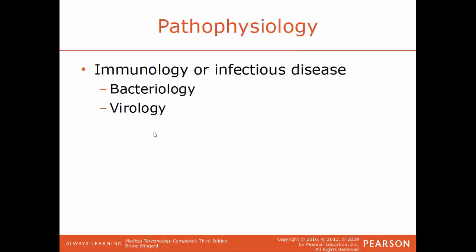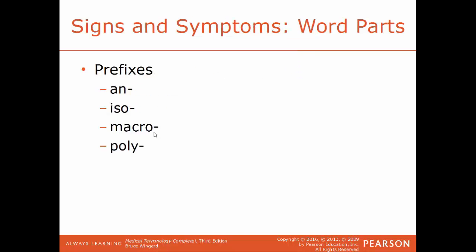Now we'll cover signs and symptoms with some word parts, starting with prefixes. An- means without or lacking — anaerobic would be without oxygen. Iso means equal. Macro means large, the opposite of micro. Poly means many.